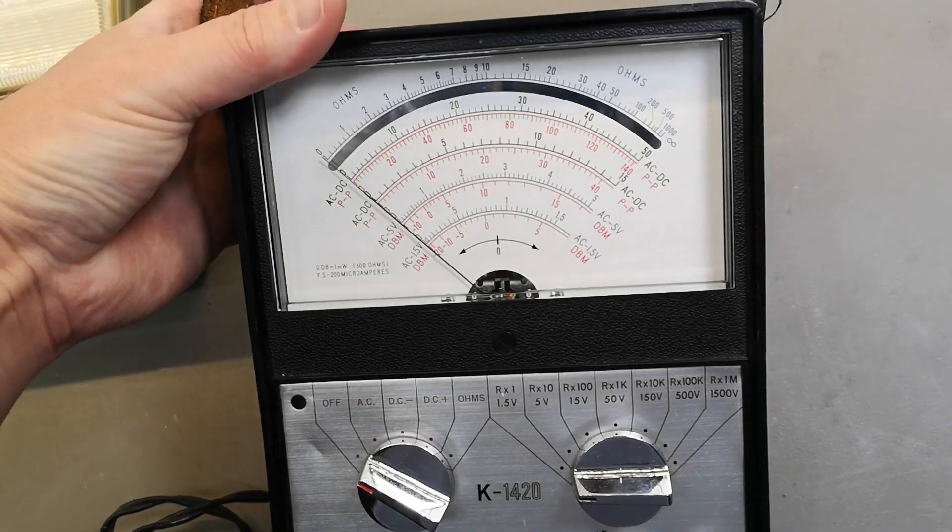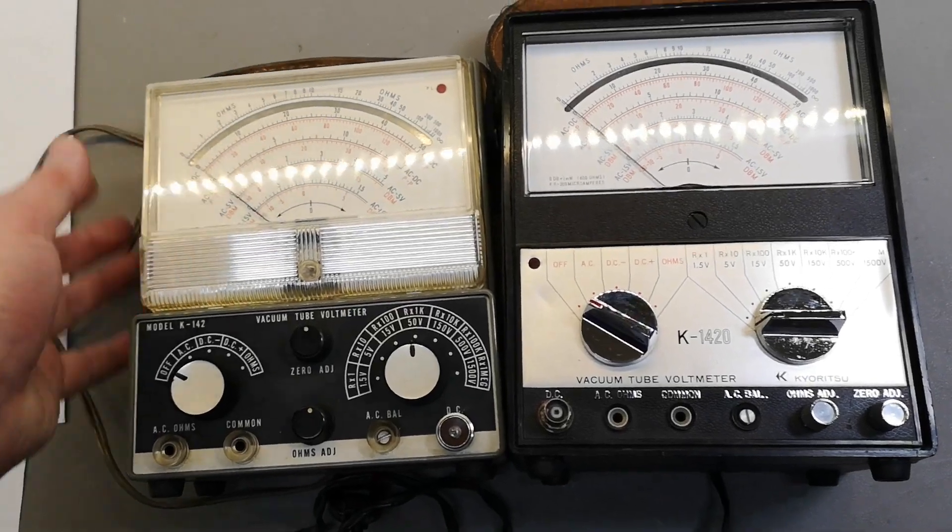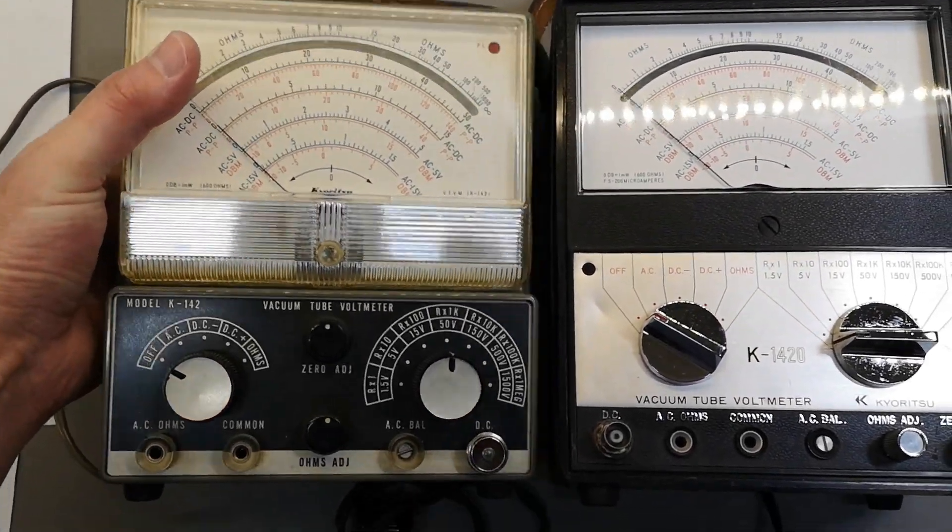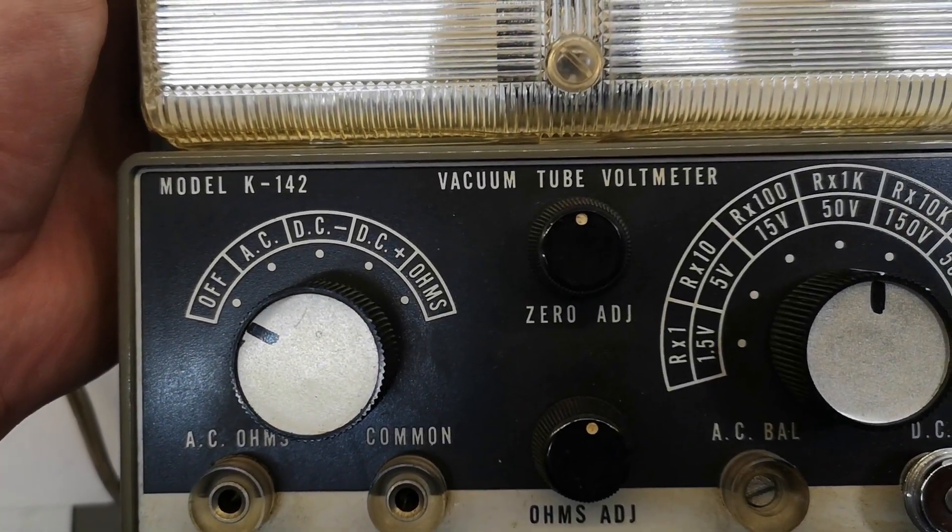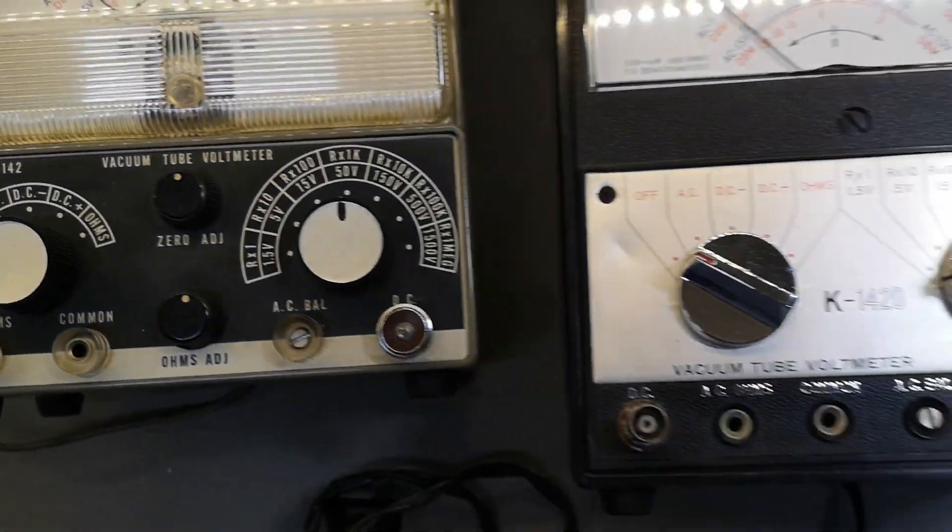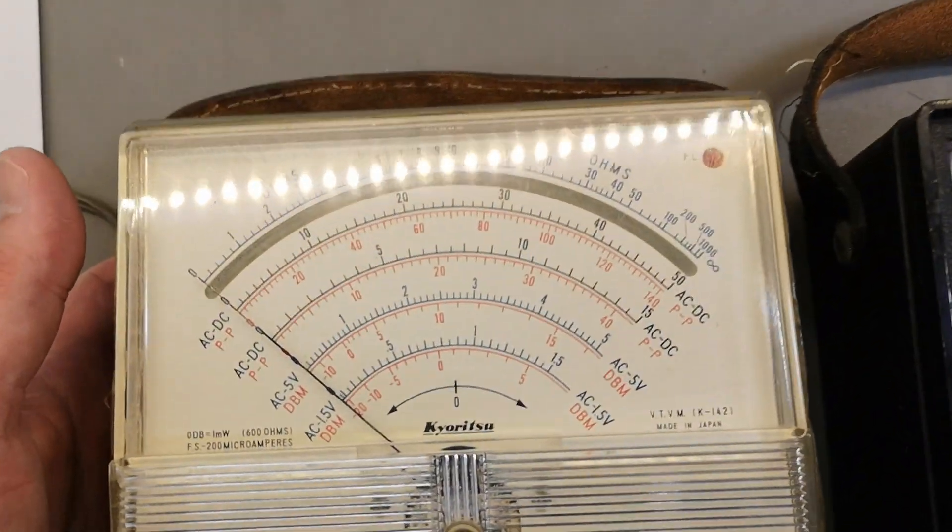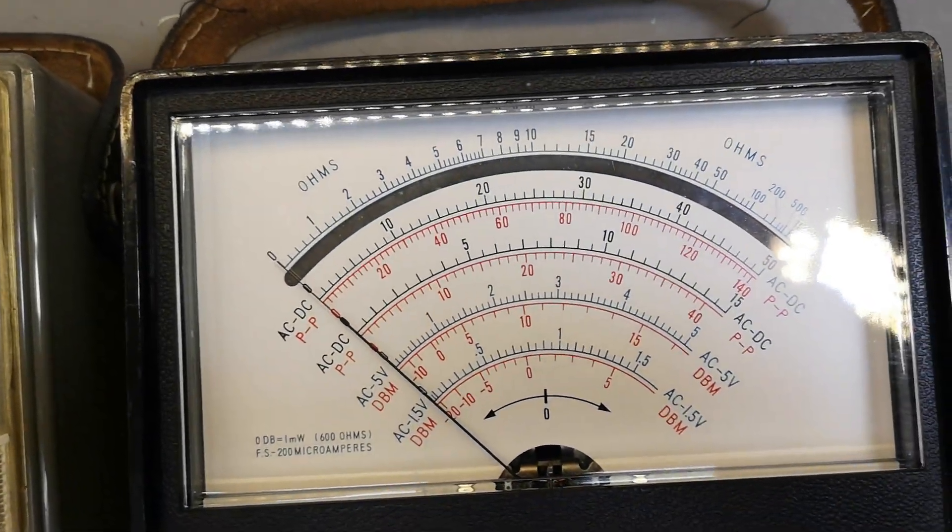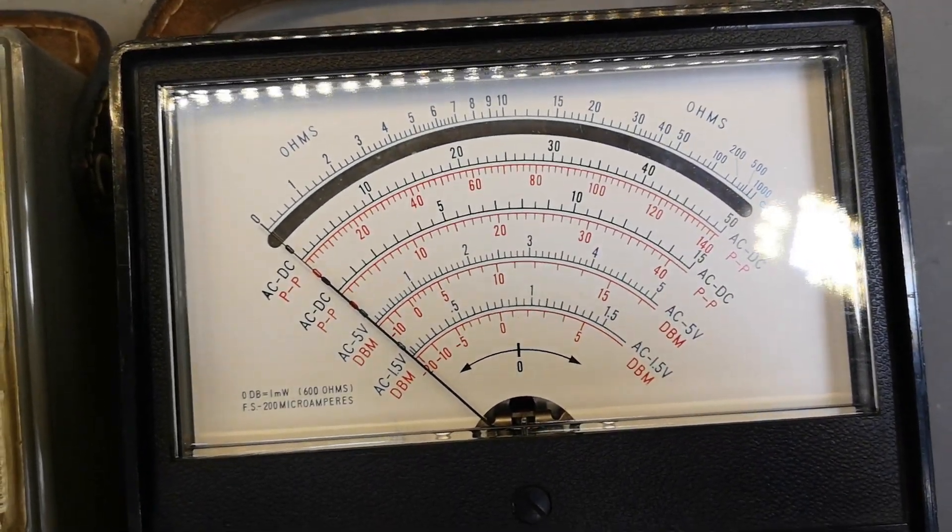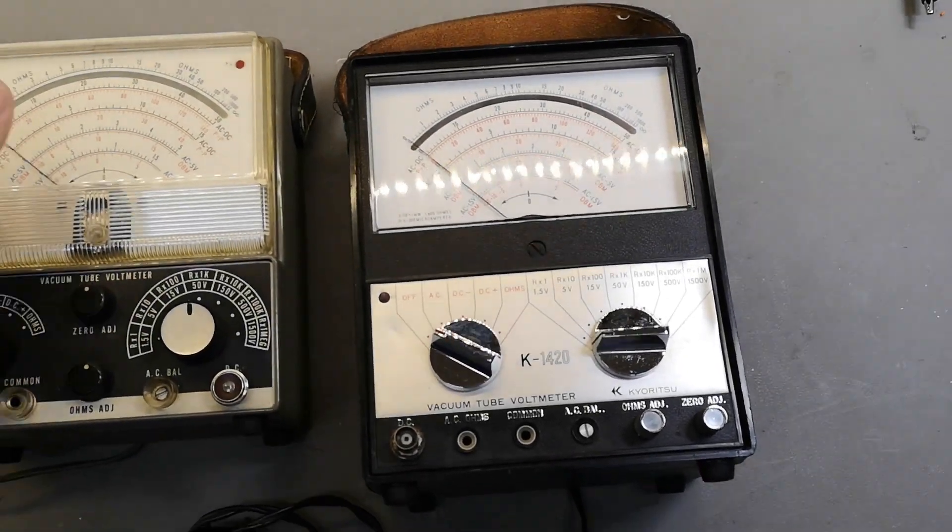Do you guys remember the previous version that I already tested and had a look at? This one is called K142, so it's very much the same. Look at the scales side by side. They're identical, but the meter itself is a little bit bigger.